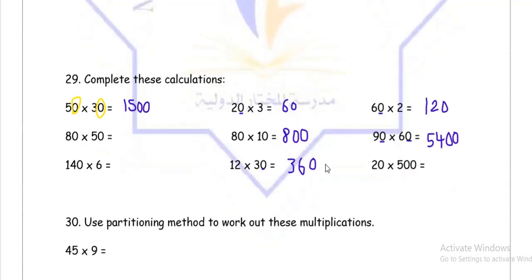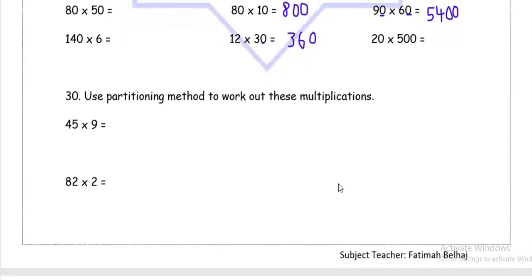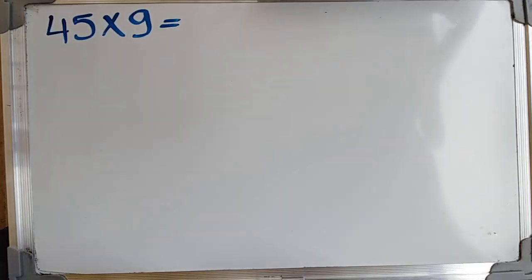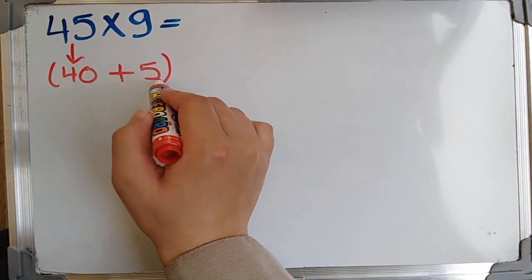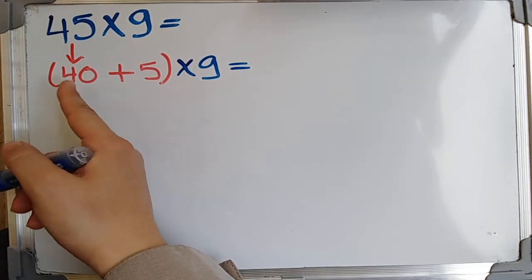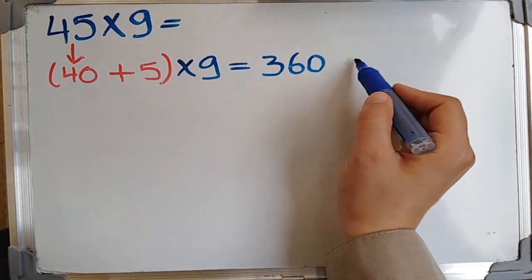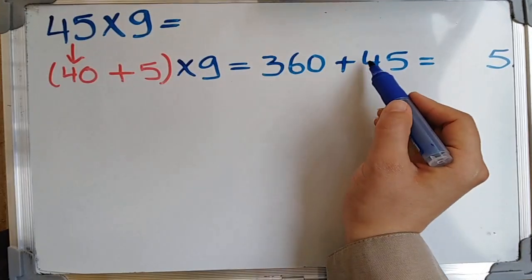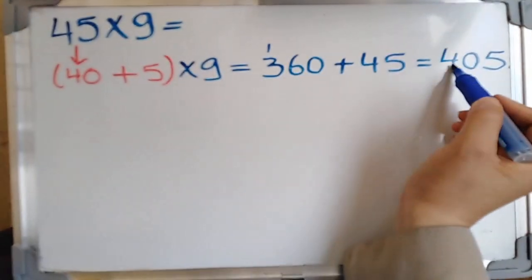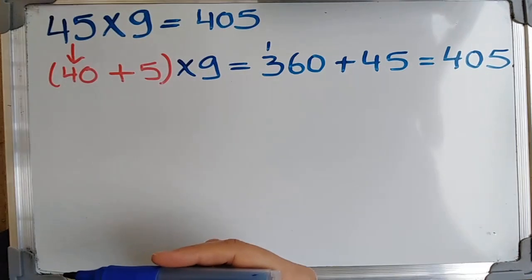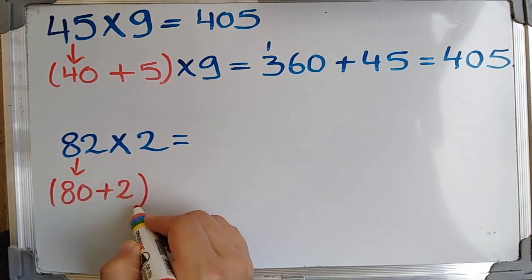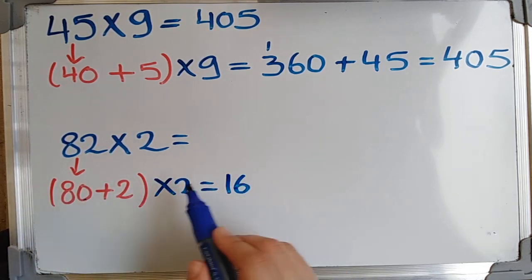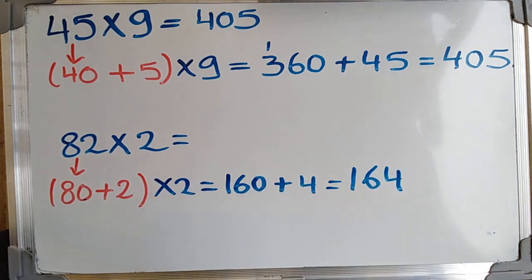Moving on to question 30: use the partitioning method to work out these multiplications. First, partition 45 into 40 and 5, then multiply each by 9. 9 times 40: 9 by 4 is 36, with a 0 that makes 360. 9 times 5 is 45. Add them together and you get 405. Next is 82 multiplied by 2 — partition 82 into 80 and 2, then multiply each by 2. 2 by 80 is 160, 2 by 2 is 4, so the answer is 164.